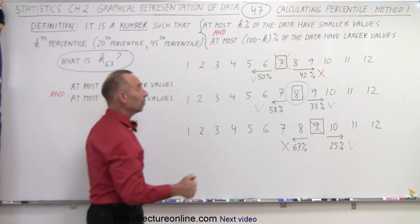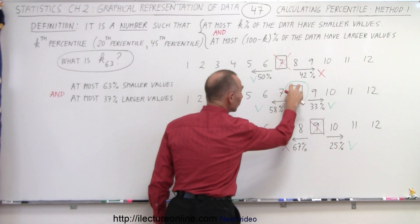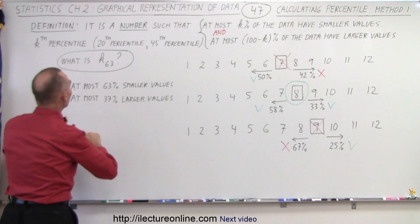Which means that number 8, the 8-1, are the data points. And the value of this, which is 8, that represents the 63rd percentile. So we can say that K63, which means the 63rd percentile, equals 8.